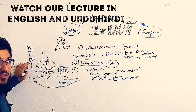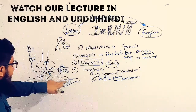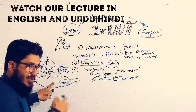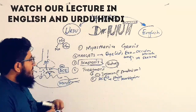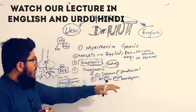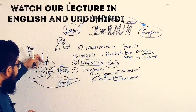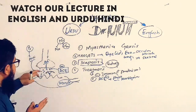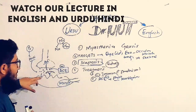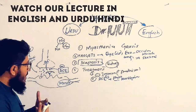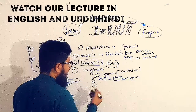Immunosuppressants suppress B cells from releasing antibodies. If antibodies are not released, the receptors will be free, and acetylcholine will be able to bind to the receptor, causing muscle contraction. Additionally, physostigmine and neostigmine inhibit acetylcholinesterase — so acetylcholine is not broken down, its concentration increases, it binds to the receptor, the receptor activates, and muscle contraction happens. This is how you can overcome Myasthenia Gravis.